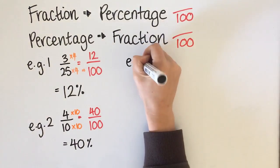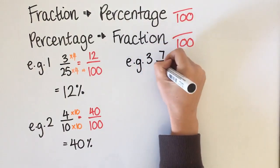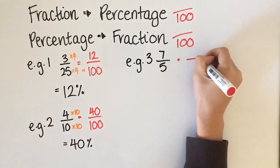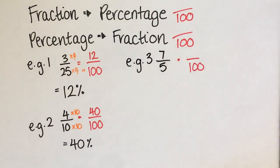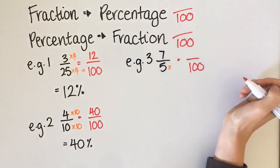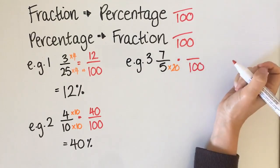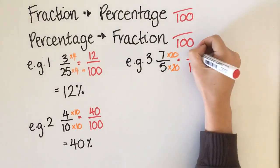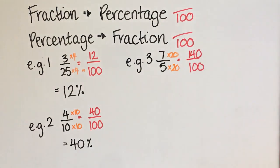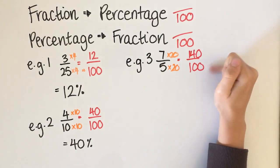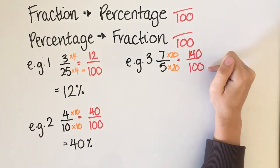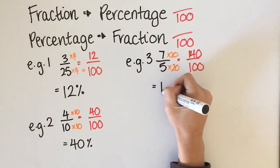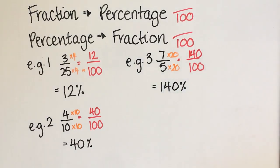One more example: 7 over 5. I want to put it over 100. 5 times 20 gives 100, so 7 also needs to be times by 20. 7 times 20 is 140. It doesn't matter that the numerator is bigger than the denominator — in the starting question the numerator was already bigger, and it is possible to have a percentage over 100.